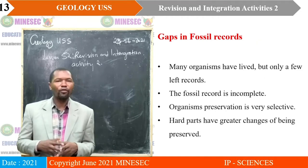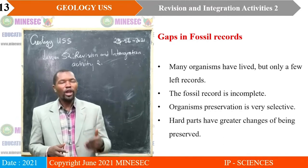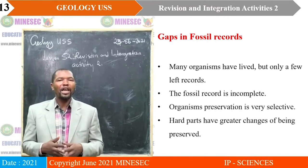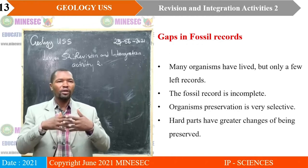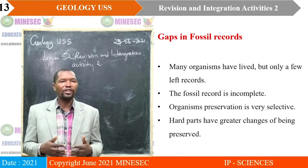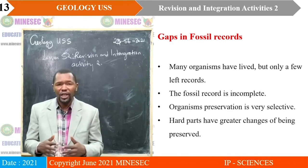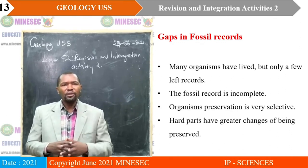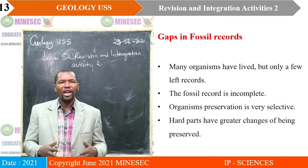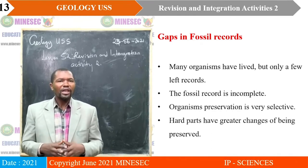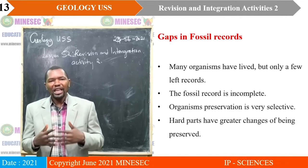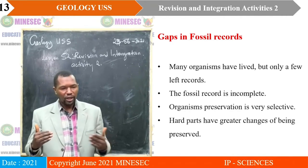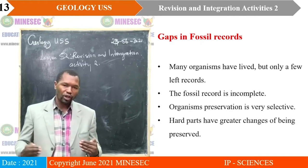Regarding gaps in fossil records: many organisms have lived, but only a few left records, meaning the fossil record is incomplete. Organism preservation is very selective, and hard parts have greater chances of being preserved, which creates gaps or distortions in the fossil record.